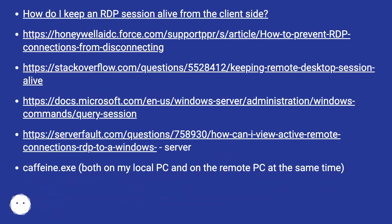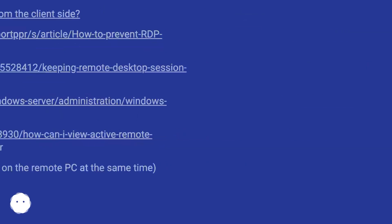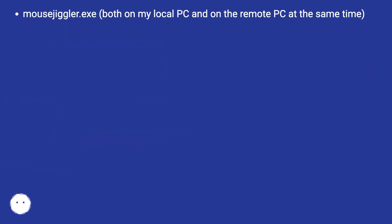How do I keep an RDP session alive from the client side? I tried various URLs, cutting.exe — both on my local PC and on the remote PC at the same time — and mousejiggler.exe, both on my local PC and on the remote PC at the same time.